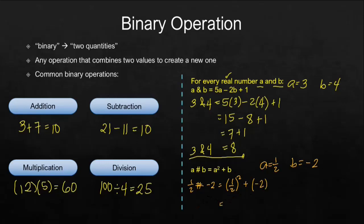So 1 half squared, so we will square the numerator and the denominator. 1 squared is 1. 2 squared is 4. And then this is minus 2. Recall that positive times negative is negative.